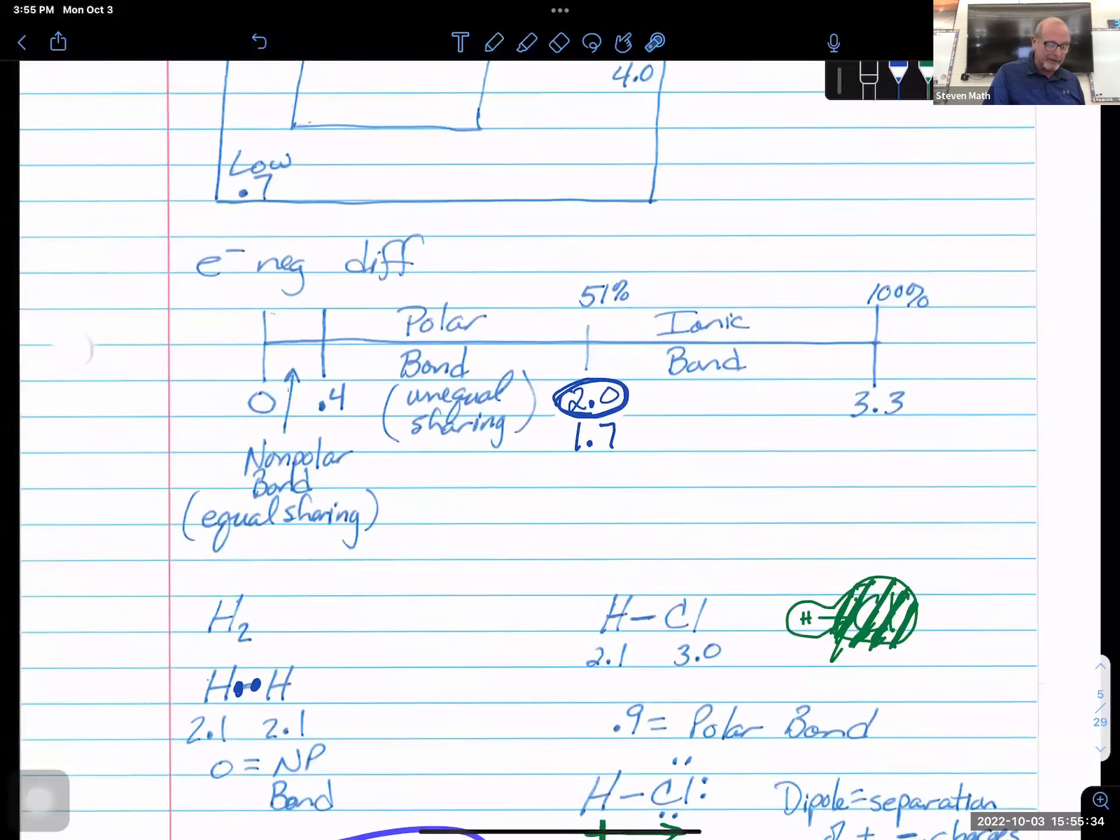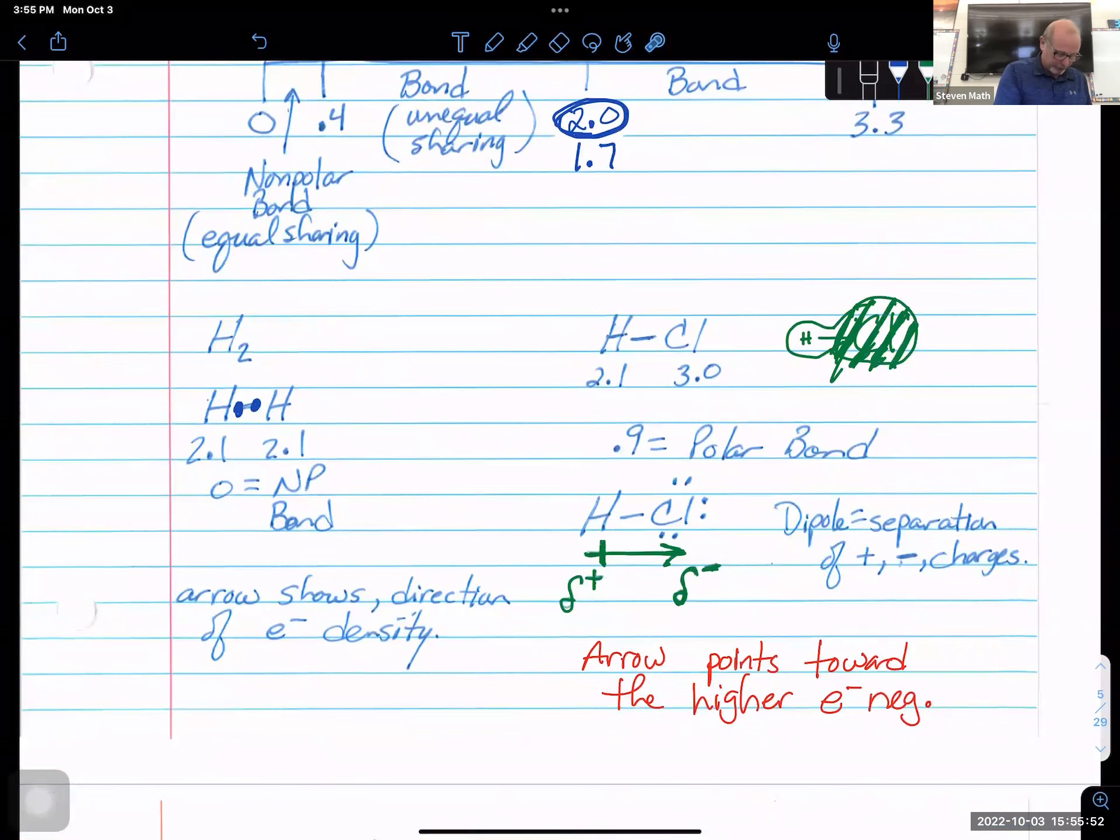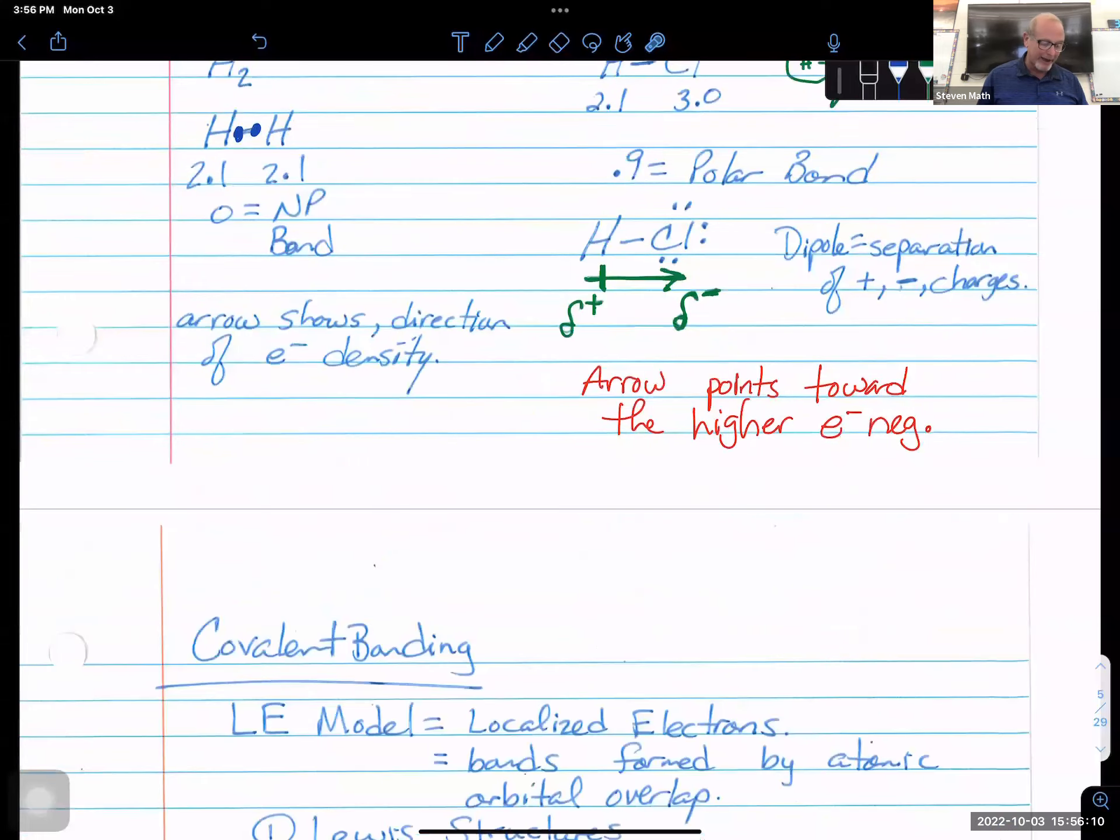So the arrow is always going to show us the direction of the electron density. Now keep in mind that's our only tricky side. If it's ionic, we're done. We're doing lattice energy. We're going to use brackets, positive and negative. If it's nonpolar, well, then there is no dipole. There's no arrow to show electron density. The electron density is equally shared. It only happens in the middle where things become polar, where there's a draw of electrons due to a difference in electronegativity values.